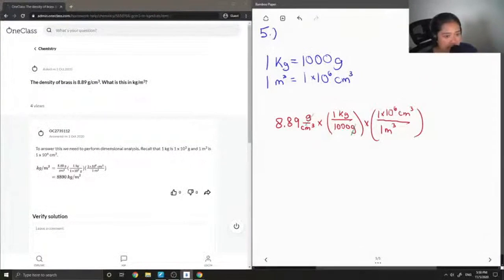So again, you'll see centimeters cubed canceling out. And if you were to plug all this into a calculator, you end up getting 8,890 kilograms per meter cubed.